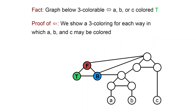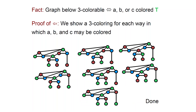There is also the other direction: if A, B, or C are colored true, then the gadget graph is 3-Colorable. You can use the same logic, or you can exhibit all possible colorings of the graph. Going through them, at the bottom are all possible ways to color the nodes, and for each of them the graph will be 3-Colorable. For example, if you have true, false, false, then the whole graph is still 3-Colorable.